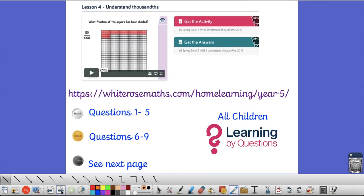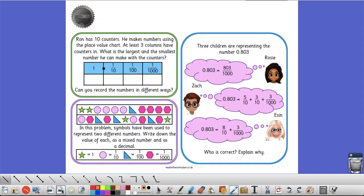So, today's learning now. You're going to use the white rows again to go through. Silver is questions 1 to 5 and gold again is questions 6 to 9. If you are ready for the Platinum Challenge, remember to challenge yourself when you can. It's on the next page ready for you.